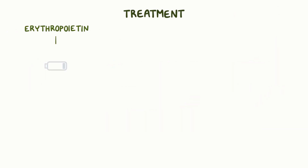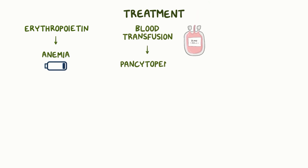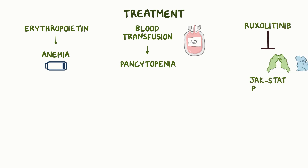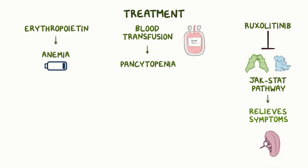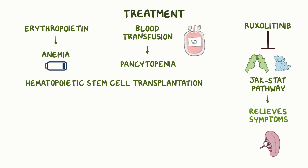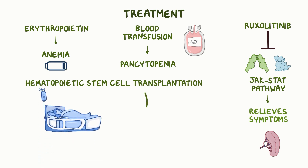Erythropoietin can be given for anemia, and blood transfusion can be given for pancytopenia. The medication ruxolitinib can help inhibit the JAK-STAT pathway, and it relieves symptoms and specifically causes a reduction in spleen size. Alternatively, a hematopoietic stem cell transplantation, which comes with its own risks, can be done to potentially cure myelofibrosis in some individuals.